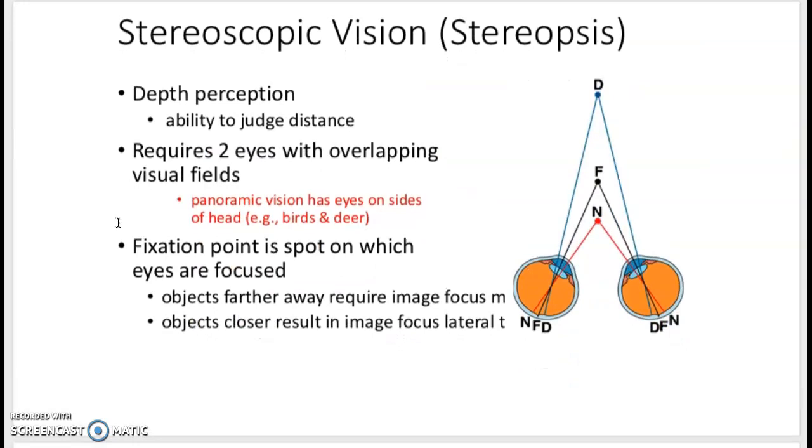Our depth perception is our ability to judge distance. We need two eyes that have overlapping fields in order to do this. So we can see if an object is closer or further, based on which part of the retina is getting hit.